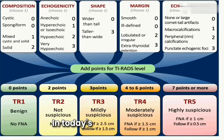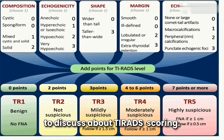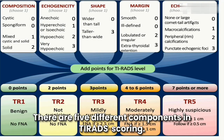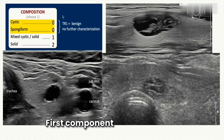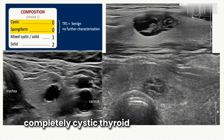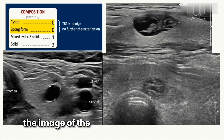In today's video we are going to discuss thyroid scoring. There are five different components in thyroid scoring. The first component is composition. This is the image of a completely cystic thyroid lesion, and this is the image of a spongiform thyroid lesion.